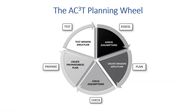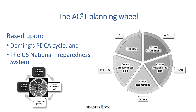ADEPT uses the AC3T, or the ACT planning wheel as we like to call it. It has five phases: assess, plan, check, prepare, and test. You'll probably recognize that ACT planning wheel — it's based upon Deming's PDCA cycle and the U.S. National Preparedness System.